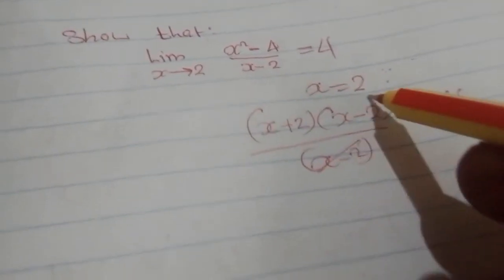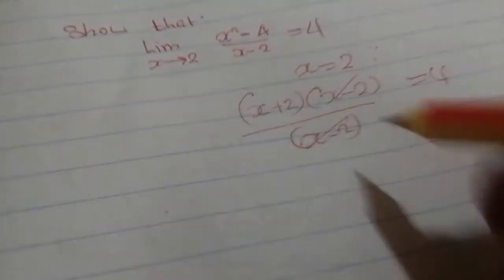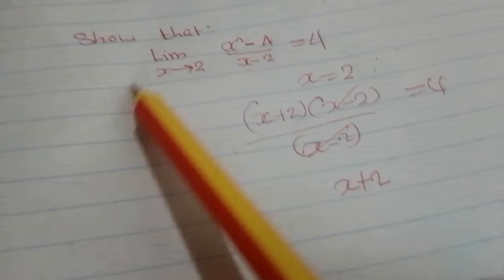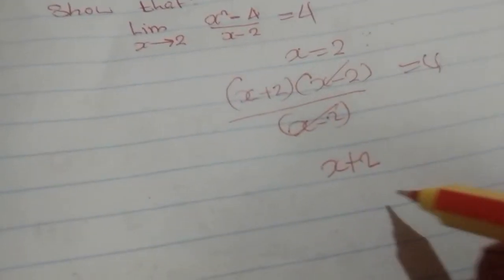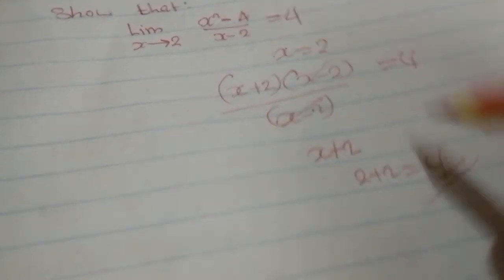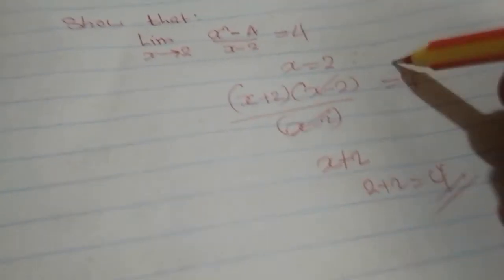So this one would go with that one, so we are going to get x plus 2. But we have turned x equal to 2, so we get 2 plus 2, which is equal to 4. That is the final - this 4 is equal to 4.